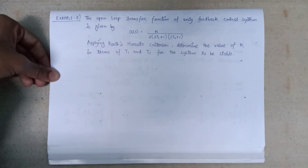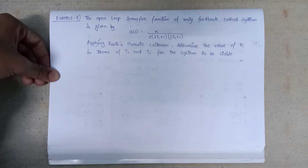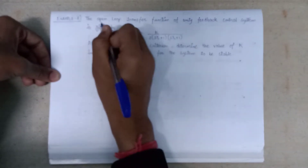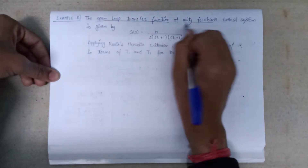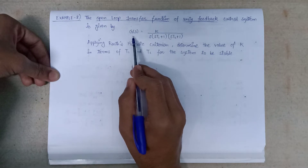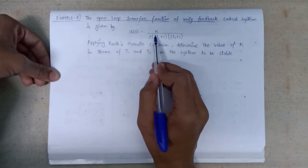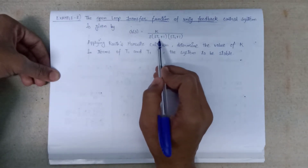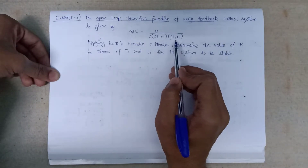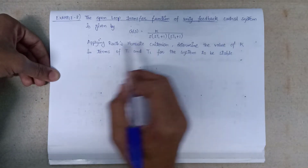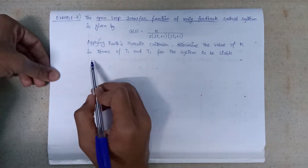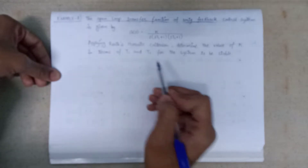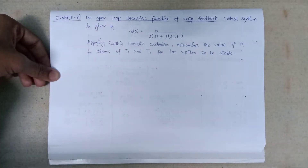Welcome all. In this lecture, we are going to solve one more example, that is example number 8. The open loop transfer function of a unity feedback control system is given as G(s) equals k over s times (sT1 + 1) times (sT2 + 1). Applying the Routh-Hurwitz criteria, determine the value of k in terms of T1 and T2 for the system to be stable.